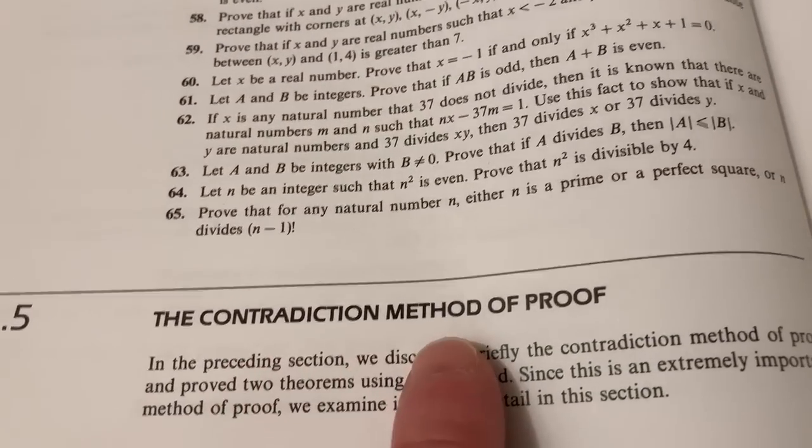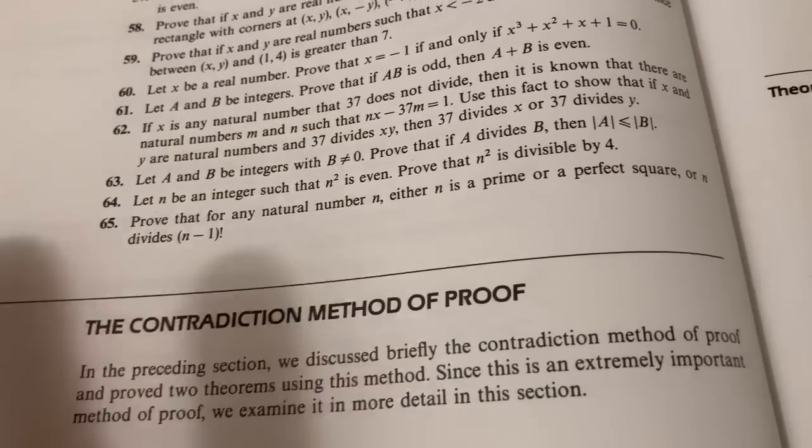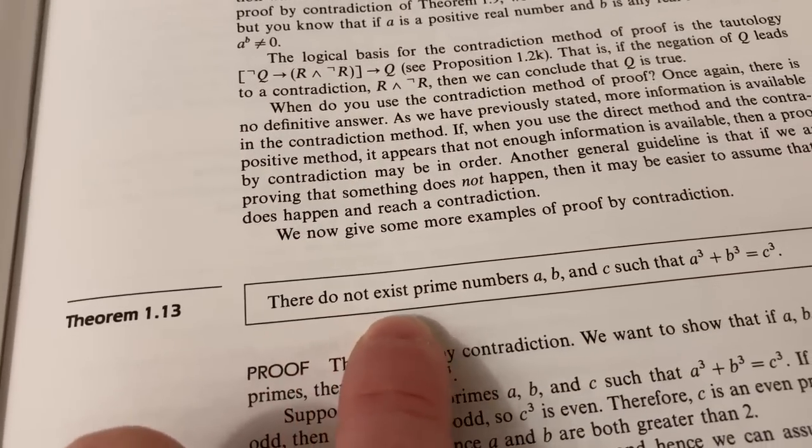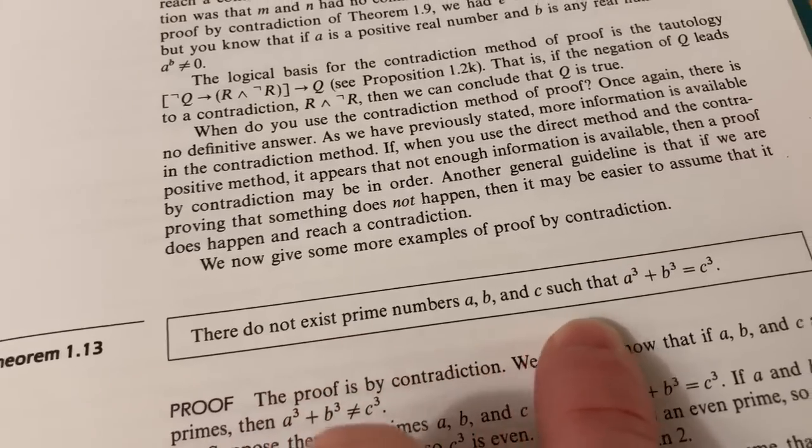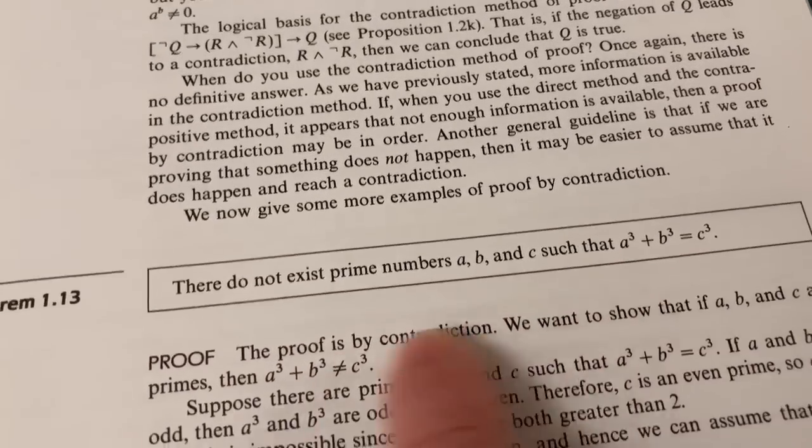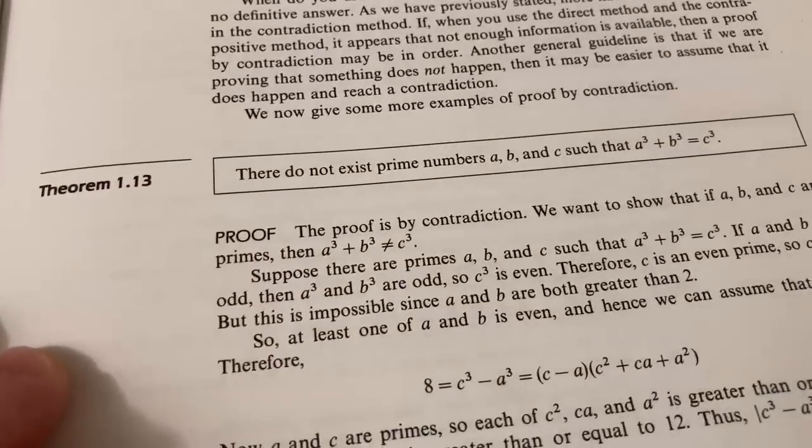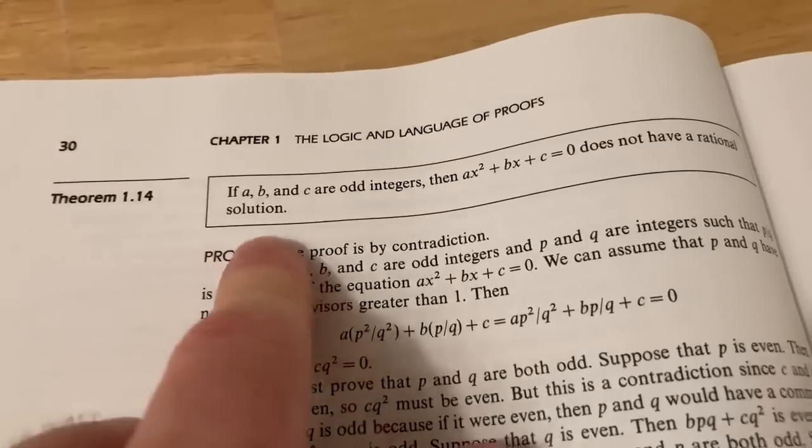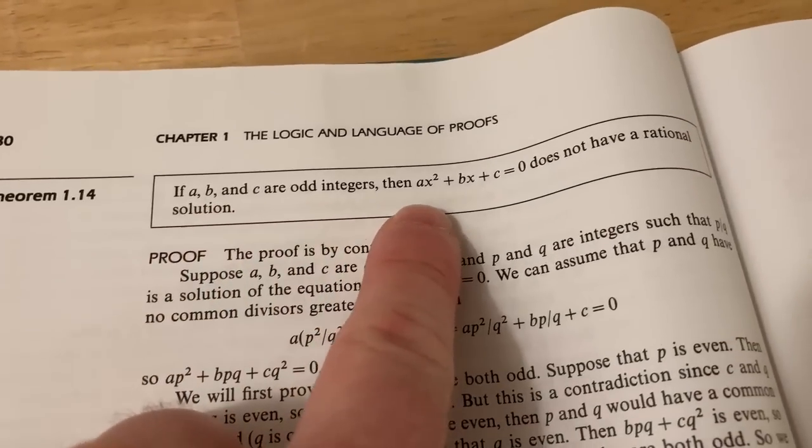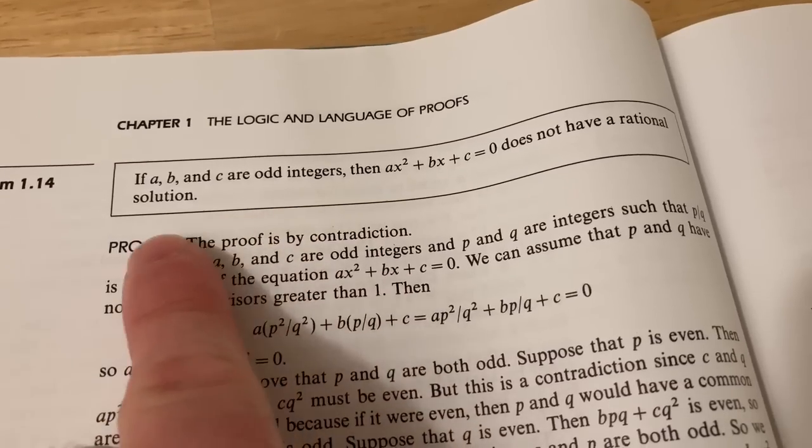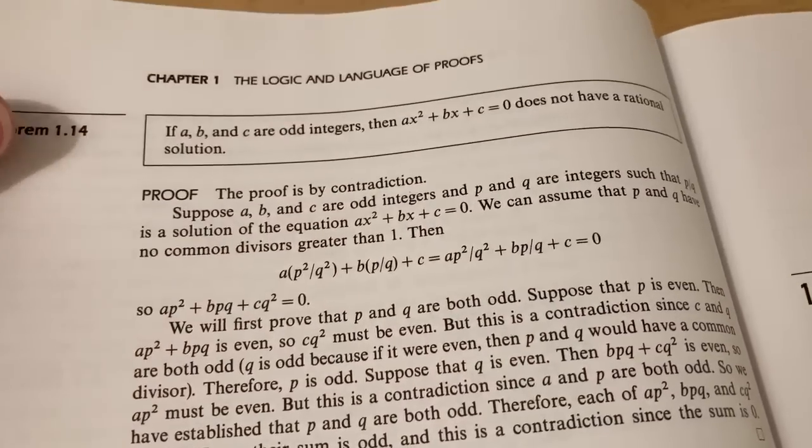This section is really cool, and it's got a lot of little fun problems. It's the contradiction method of proof. Those are always really fun proofs, and they give you a really cool example here, where you have to show that there do not exist prime numbers a, b, and c, such that a cubed plus b cubed equals c cubed. Now this is a really fun proof, and I won't go through all the details, but it's just kind of cool they provide stuff like that in the book. And there's another one over here, it's also pretty fun. If a, b, and c are odd integers, then ax squared plus bx plus c equals zero does not have a rational solution. So really nice proofs.